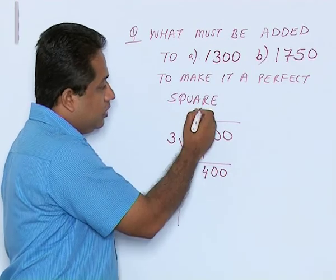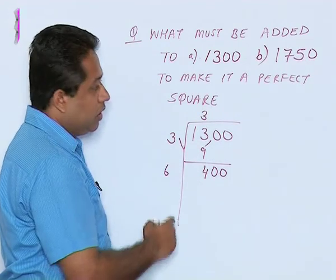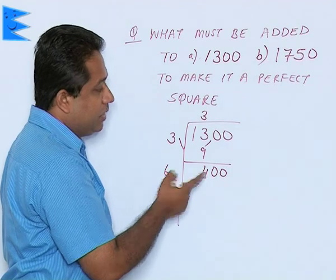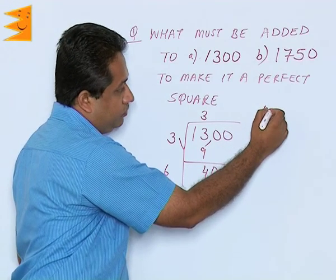The quotient here is 3. Double 3, we get 6. Now along with 6 you have to put a number and multiply by that number. So let us say 5.